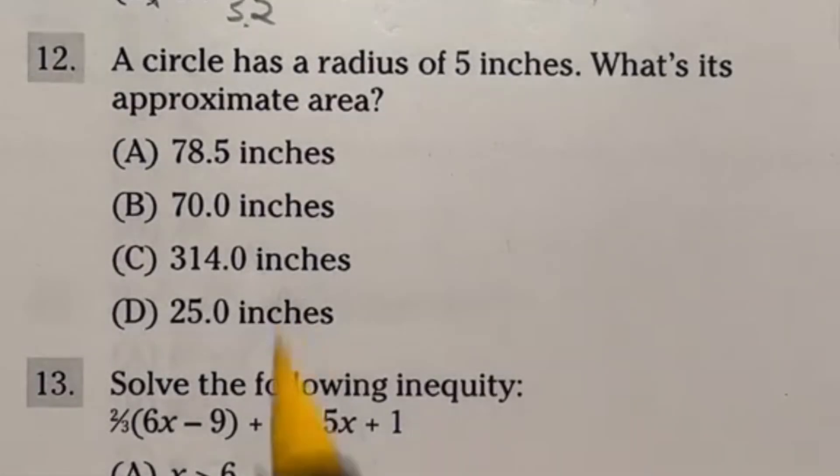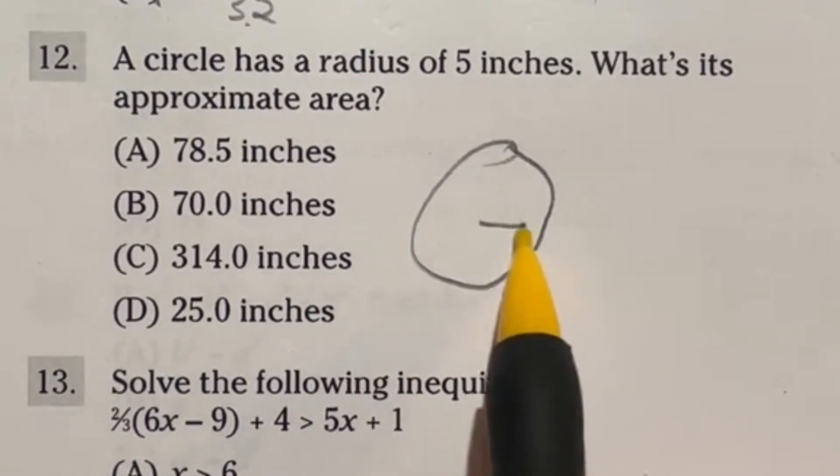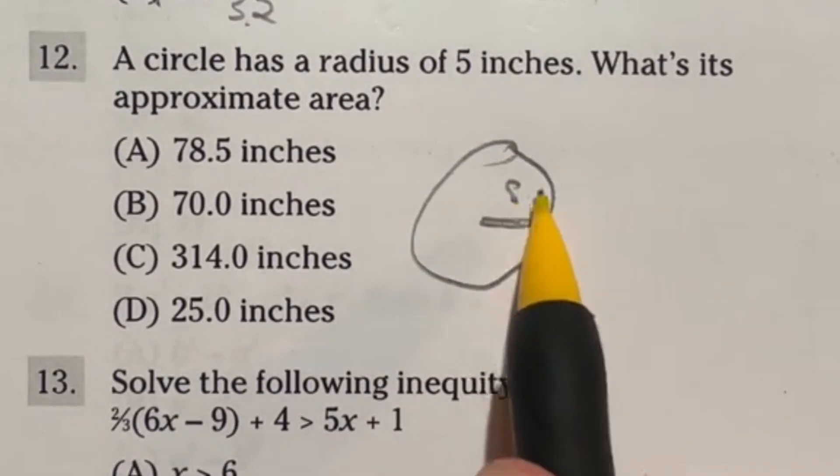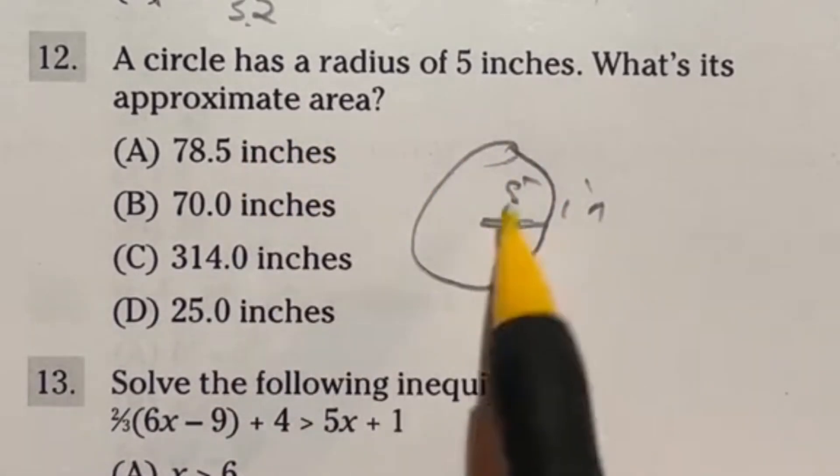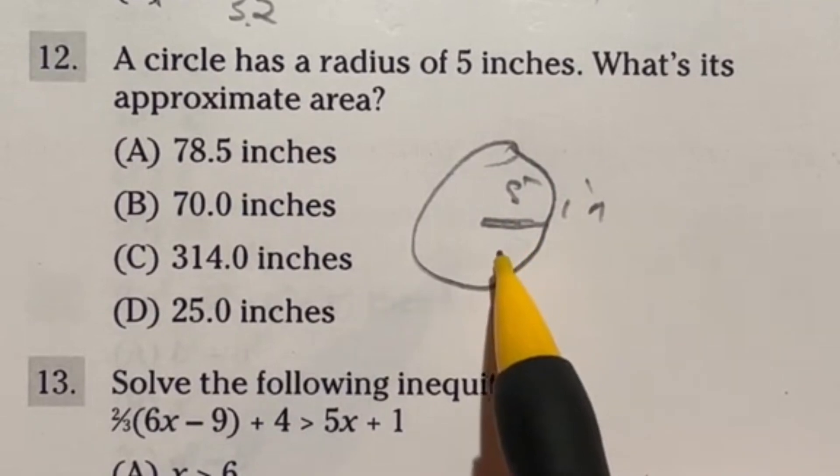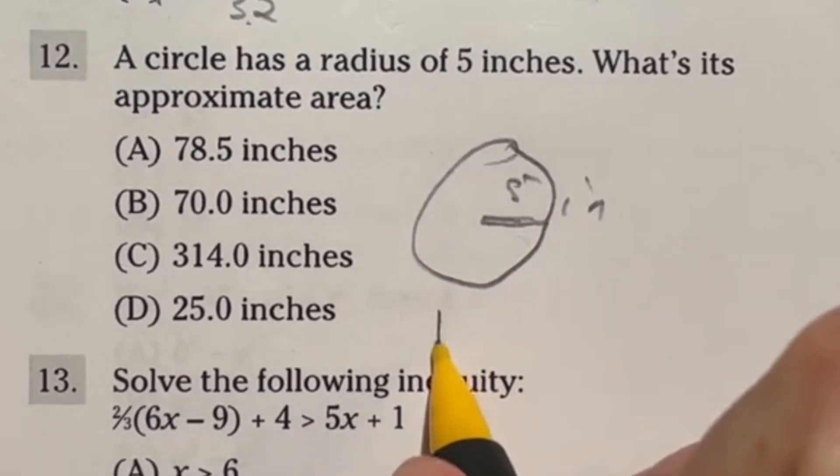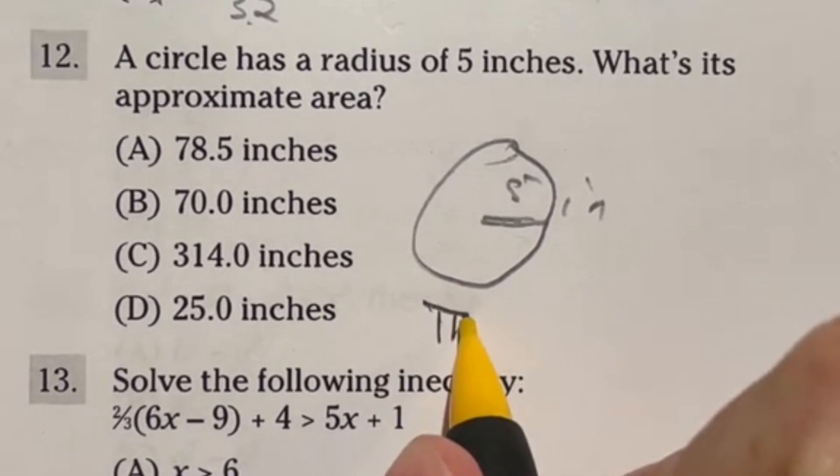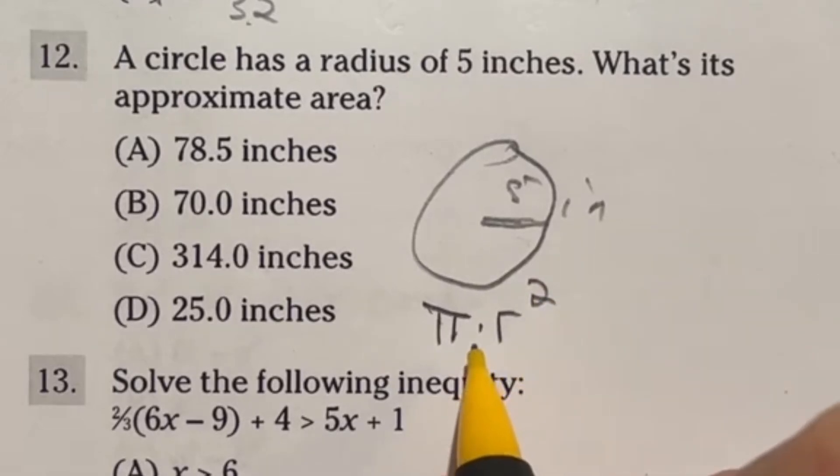Number 12 on the ASVAB, it's not too bad here. So the circle has a radius of five inches. Remember, radius is only half of this guy right here, so it's saying that's five inches. Then it says, what is the approximate area of this circle? So in this case, one of the area formulas that you really should just know is that the area of a circle is equal to pi times the radius squared. So usually people just say pi r squared.